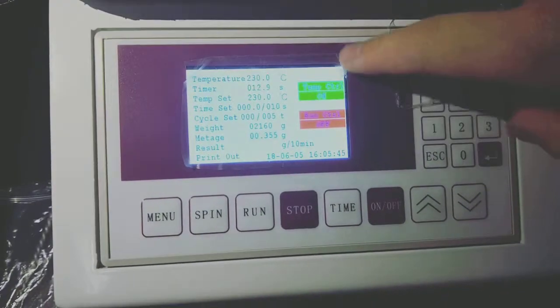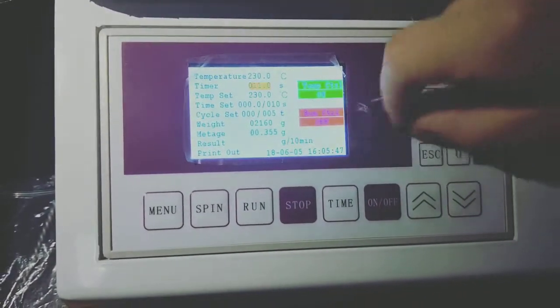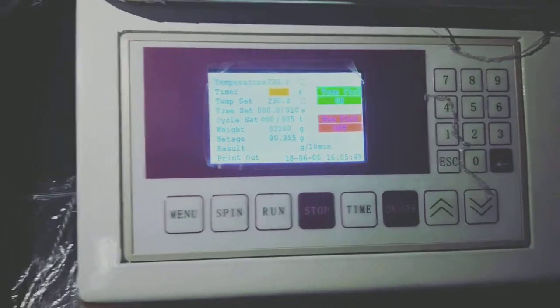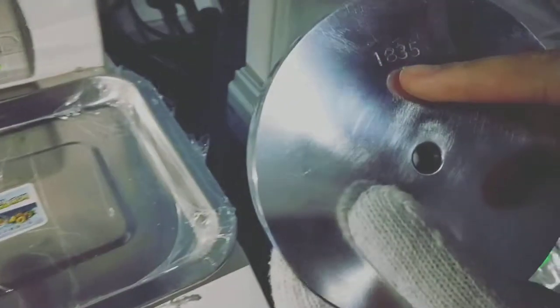Now the time is almost reaching zero. Then we choose this weight 1835, and this rod is 325. All this added together is 2160.